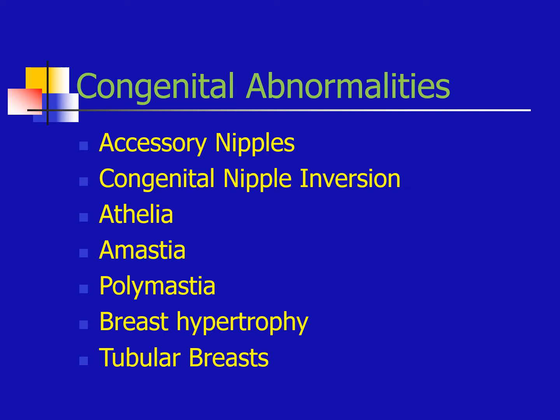Before we go into acquired breast diseases, we have congenital abnormalities as breast diseases. These include accessory nipples, congenital nipple inversion, atelia or amastia — that is lack of nipple and lack of breast tissue — polymasthia, breast hypertrophy, and tubular breasts.